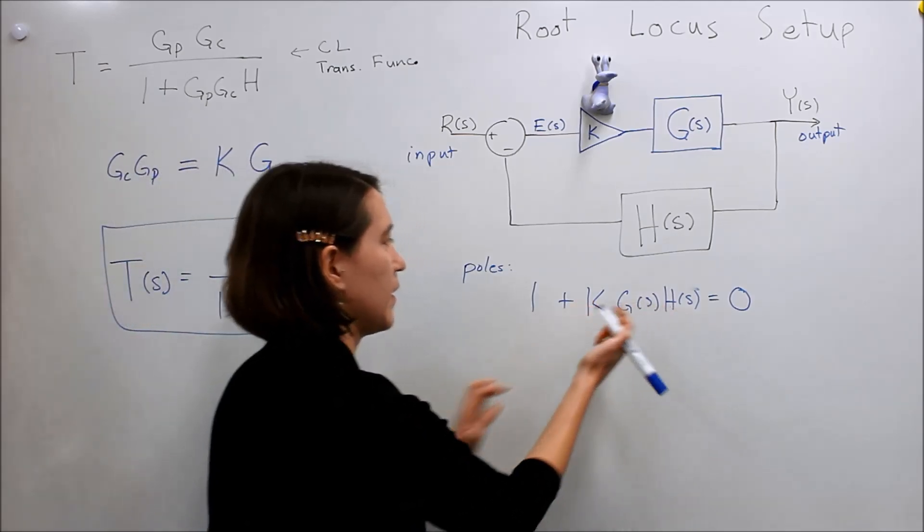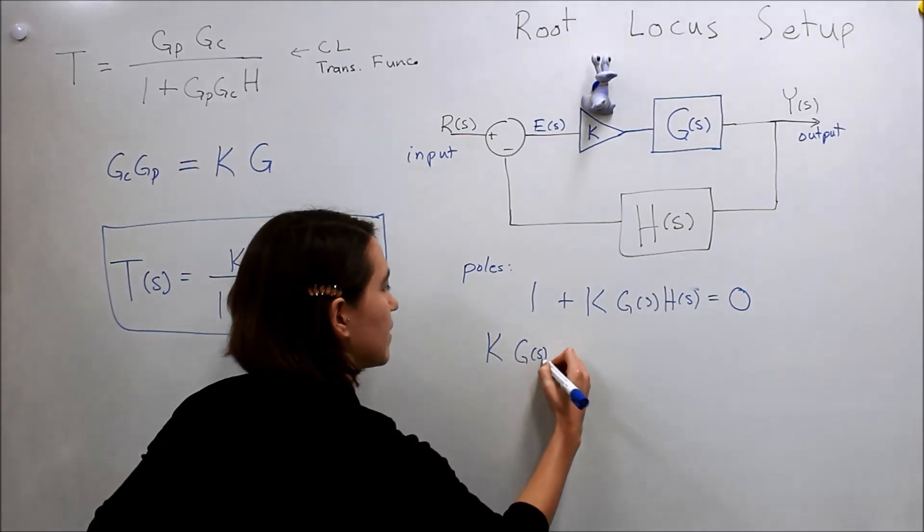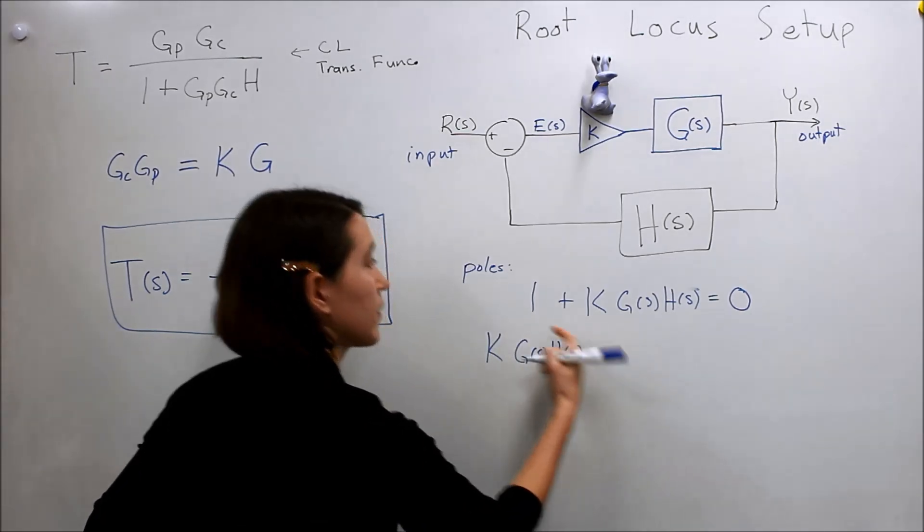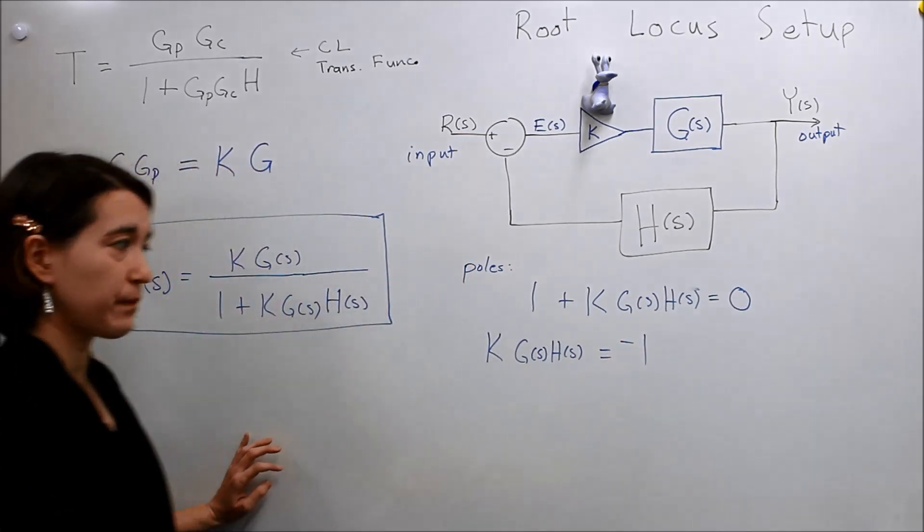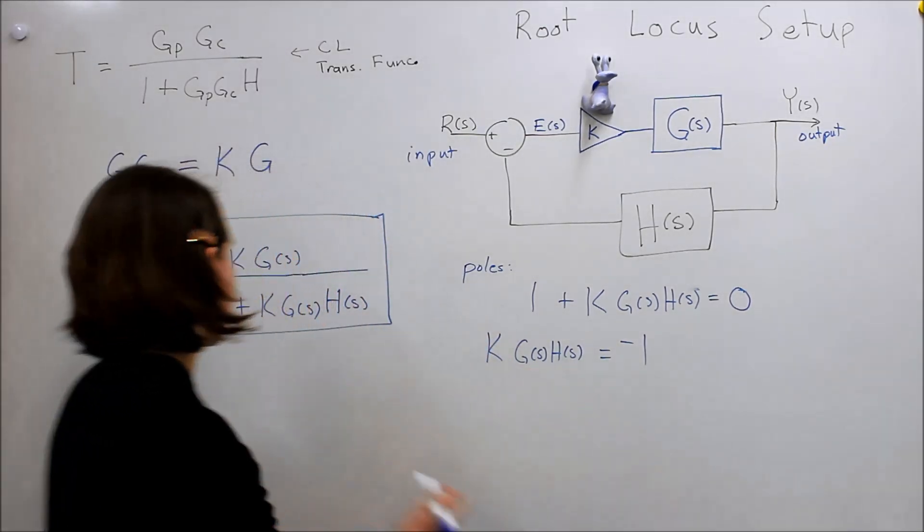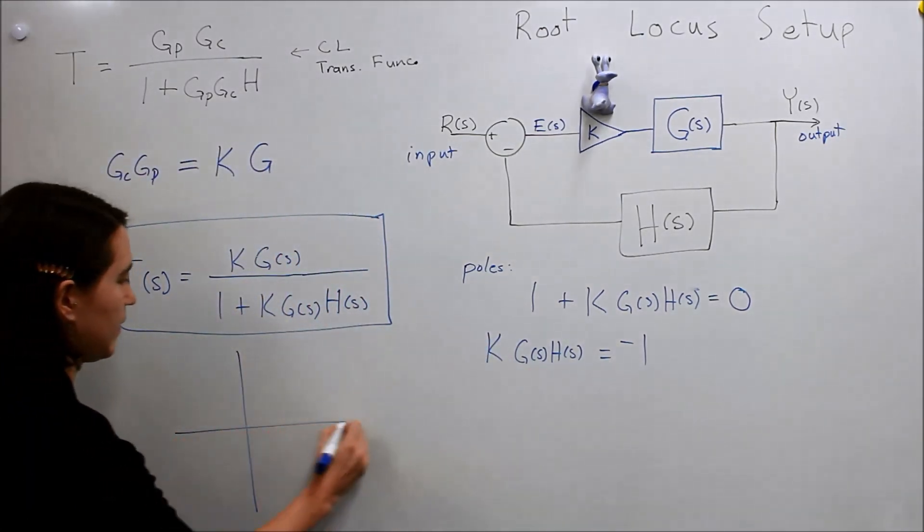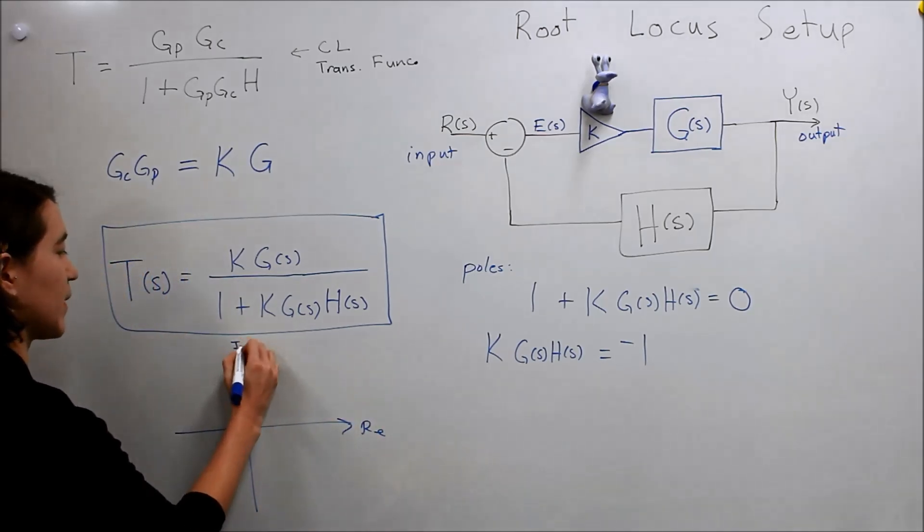This expression, so K, G of s, H of s, for this to be satisfied has to be equal to negative one. And, again we'll be picking S values. And so S, on the S plane, it's the same as the real and the imaginary aspects.